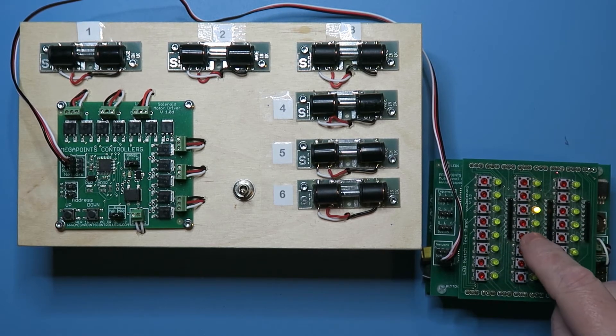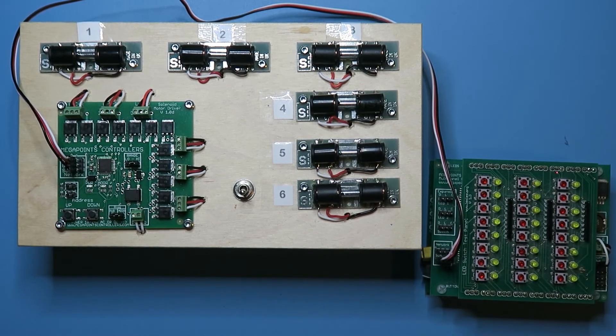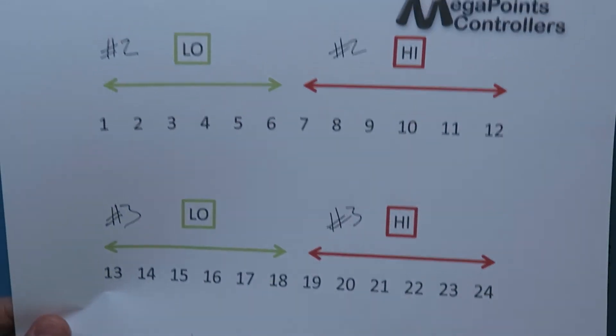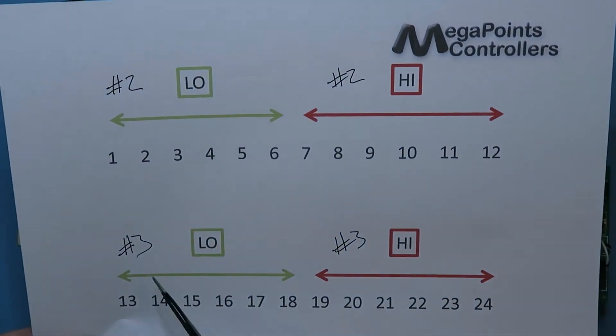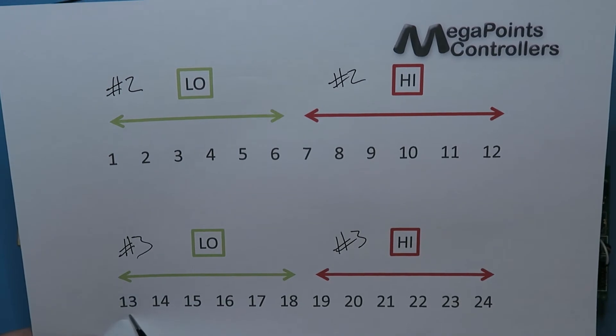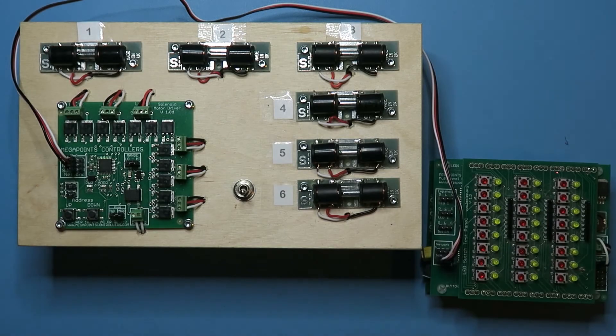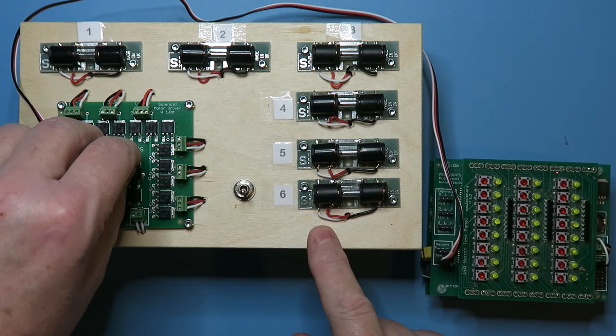Okay, how do we get 13? Well, 13 according to the chart is address 3 low, so 13, 14 to 18. So what I'll do, I'll move this jumper to low.